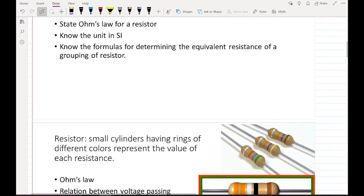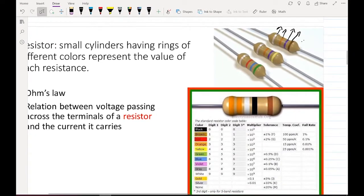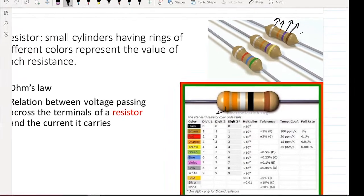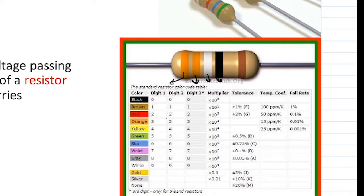A resistor with small cylinders has rings with different colors. Each color has a value, and each value is shown in this table. Each ring means a value for resistance.